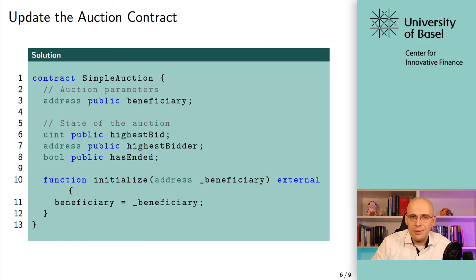After confirmation, when you scroll down you can see the function called initialize — the method ID corresponds to the function — and there is the address which we have set. When you click on beneficiary again, you can see the address right here, so it's no longer the default value. For your reference, you also have the solutions on the slides, and there is also a repository on GitHub for this lecture where you can easily copy the solutions from if needed.